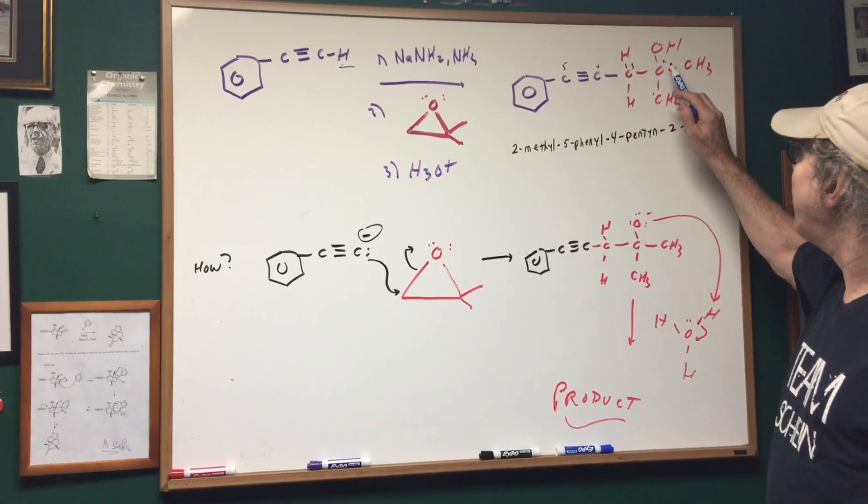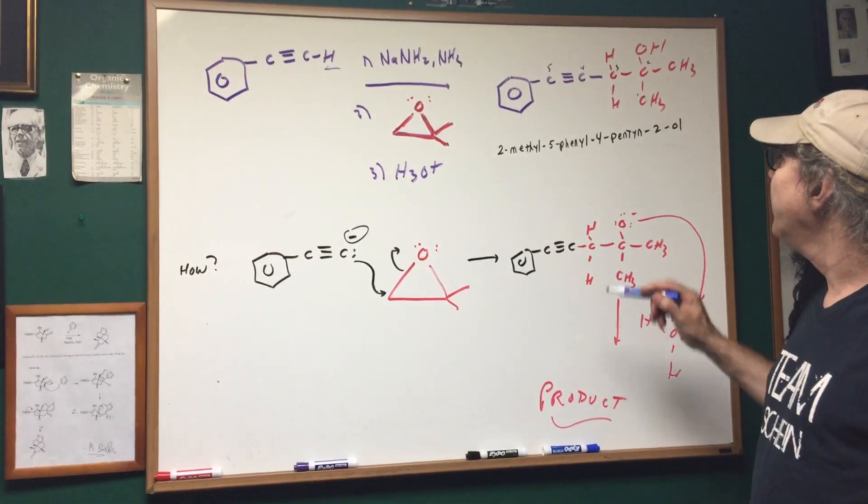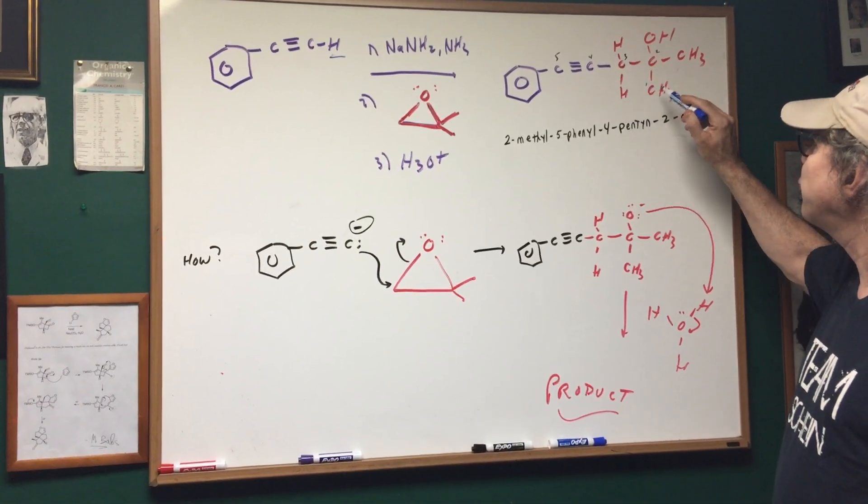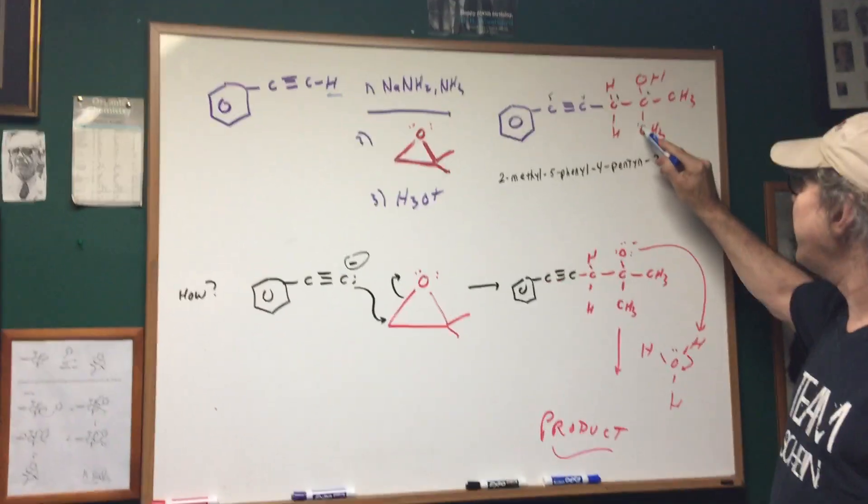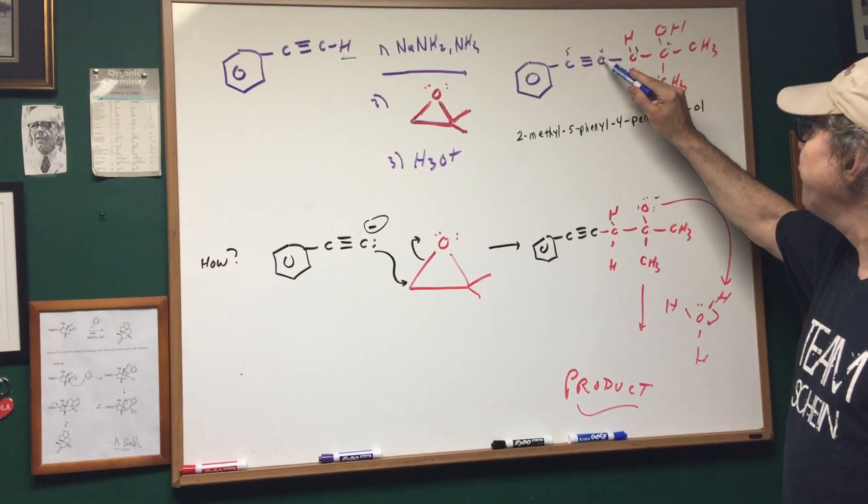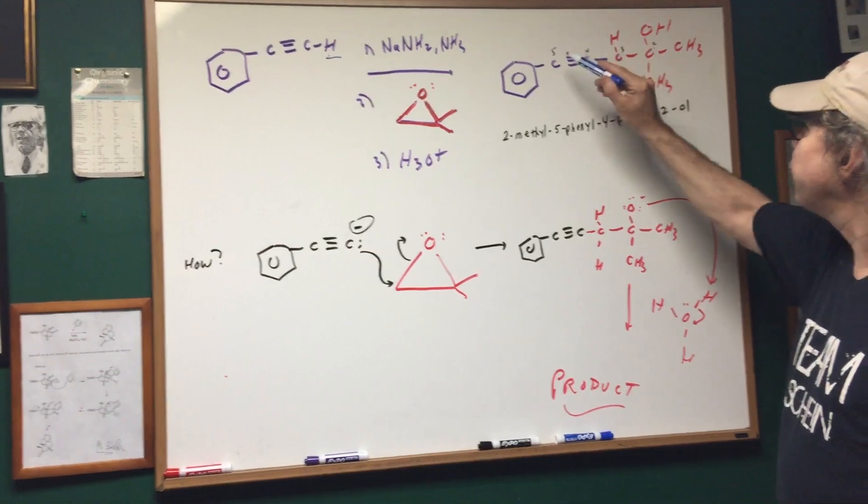And if I named it, the alcohol group is going to be the main priority because that's the main functional group. So the longest chain bearing the alcohol is one, two, three, four, five. Or you could have went across. It wouldn't have mattered.